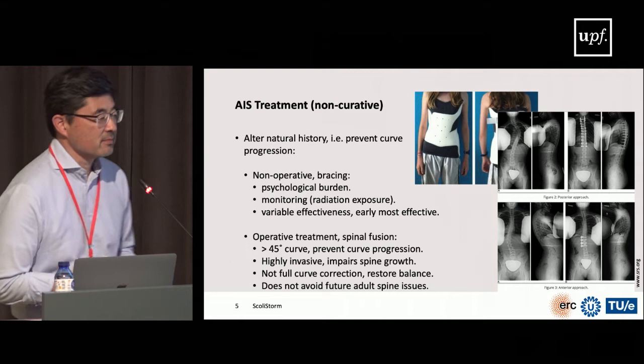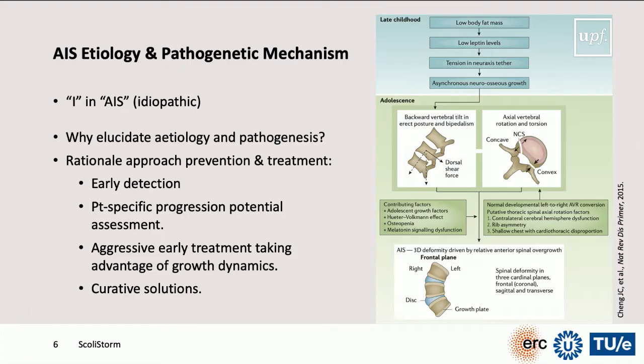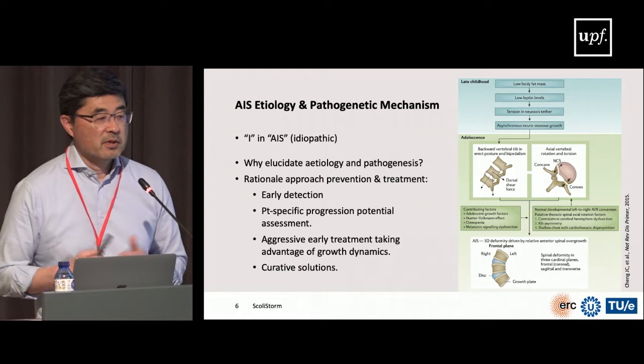Why am I interested in what actually causes AIS rather than trying to create a treatment? We think that if you know the cause, you can have rational approaches to both prevention and treatment. For example, you may figure out ways to detect it earlier, identify which patients will progress and which won't, apply aggressive early treatments for those who will progress — potentially saving them a lot of trauma — and eventually come up with curative solutions. Knowing the cause is very important.